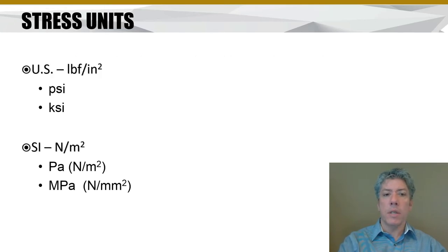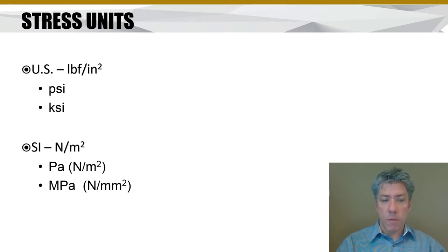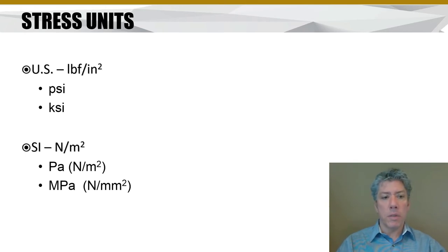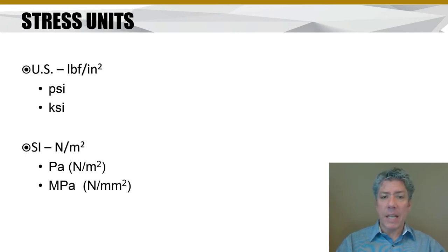Stress is force per area. The units we have for stress in English are either psi or ksi, where psi is a pound per square inch - pounds force, not pounds mass - and ksi is thousands of pounds per square inch. In metric units, we have pascals as the basic unit, but a pascal is a pretty small amount of stress. A pascal is a newton per meter squared, whereas a megapascal is more reasonable and is newtons per millimeter squared.